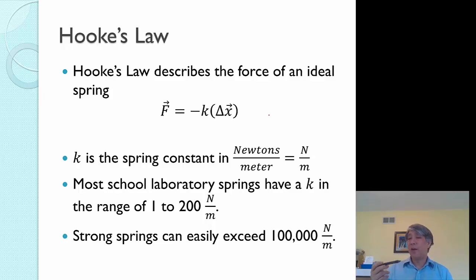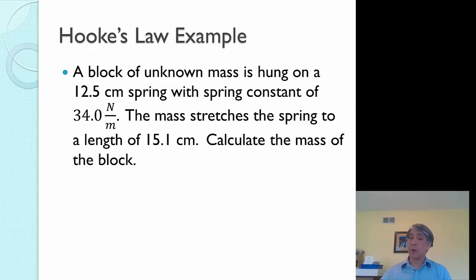Hooke's Law, we covered very briefly towards the beginning of the year. But Hooke's Law describes the force of an ideal spring. And it says that the force is going to be, there's that minus sign, minus K, where K is the spring constant, times the displacement. In general, the springs that we have in school are somewhere in the range of 1 to 200 newtons per meter. But you can certainly have much stronger springs. And this is important because Hooke's Law basically says that my force for the spring is a restoring force because of that minus sign. And it's a constant based on the displacement. It's a perfect example of simple harmonic motion.